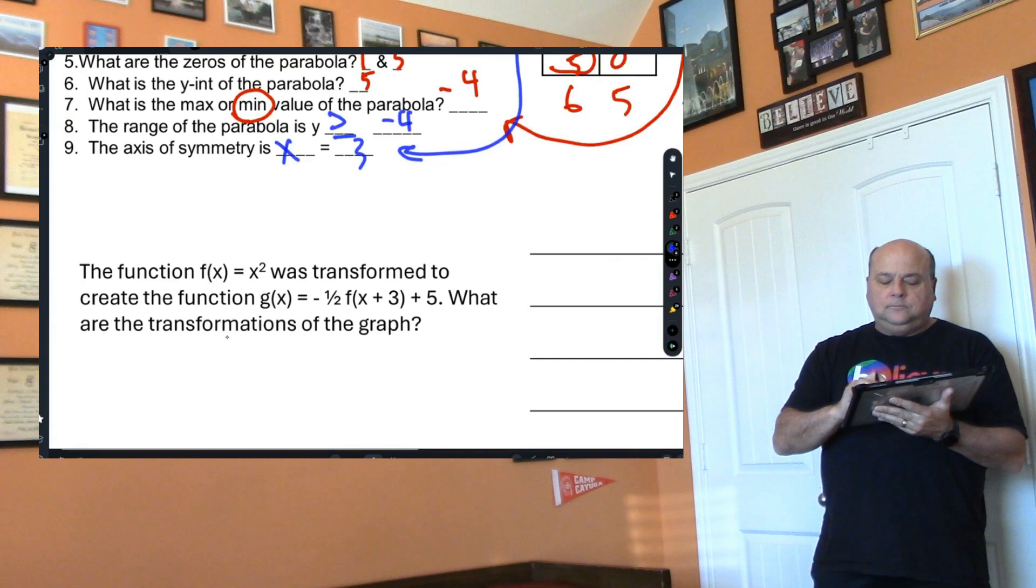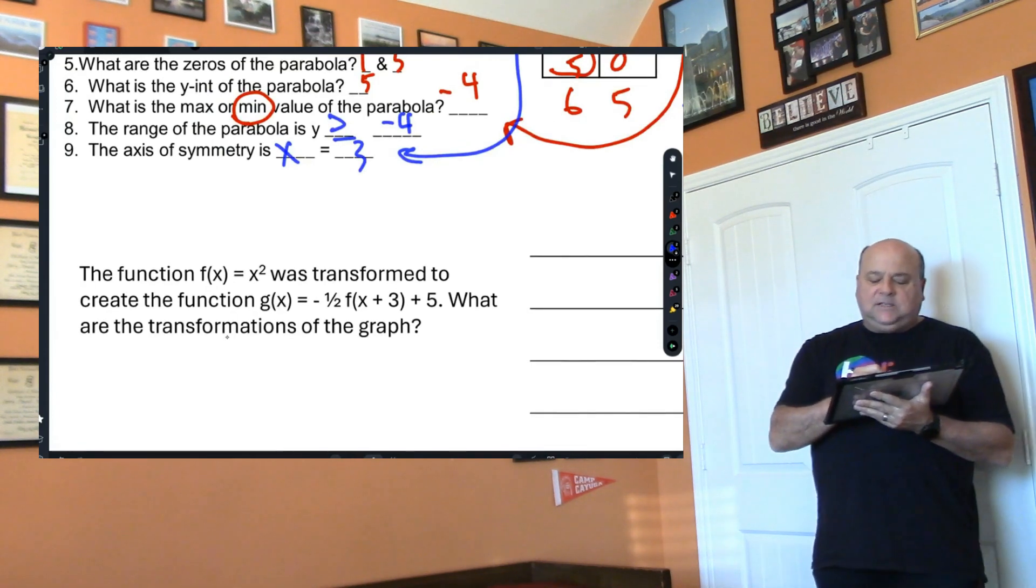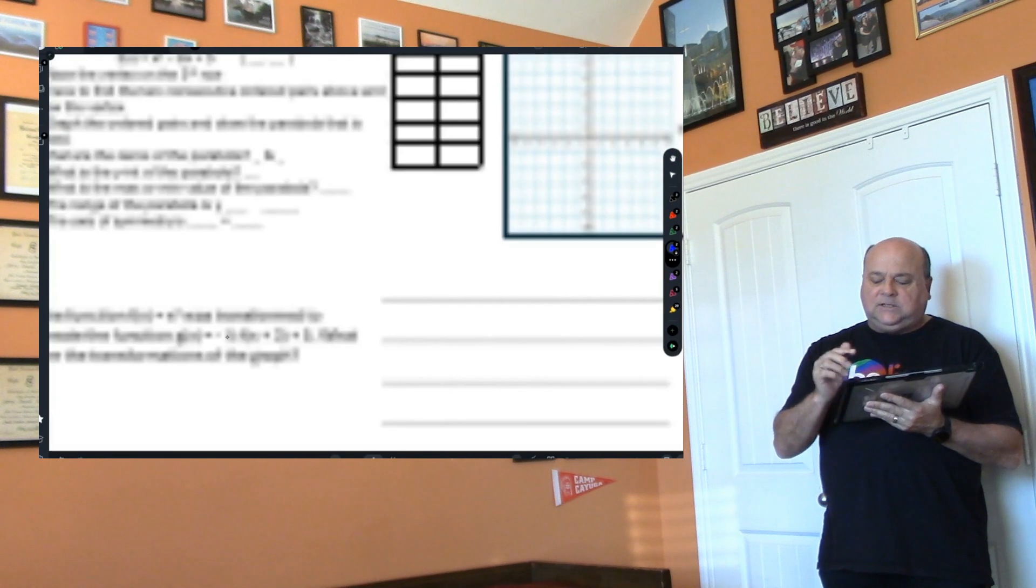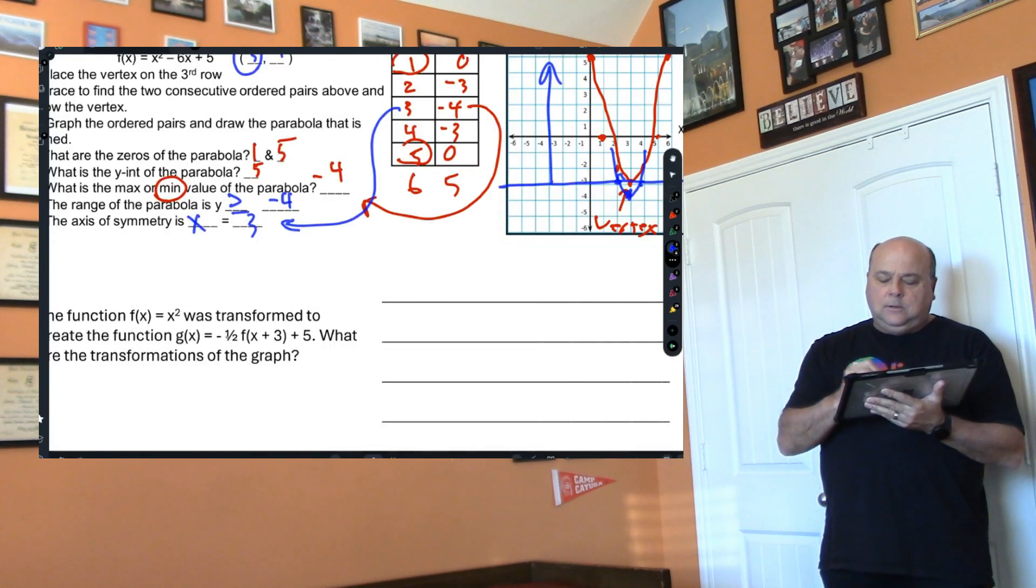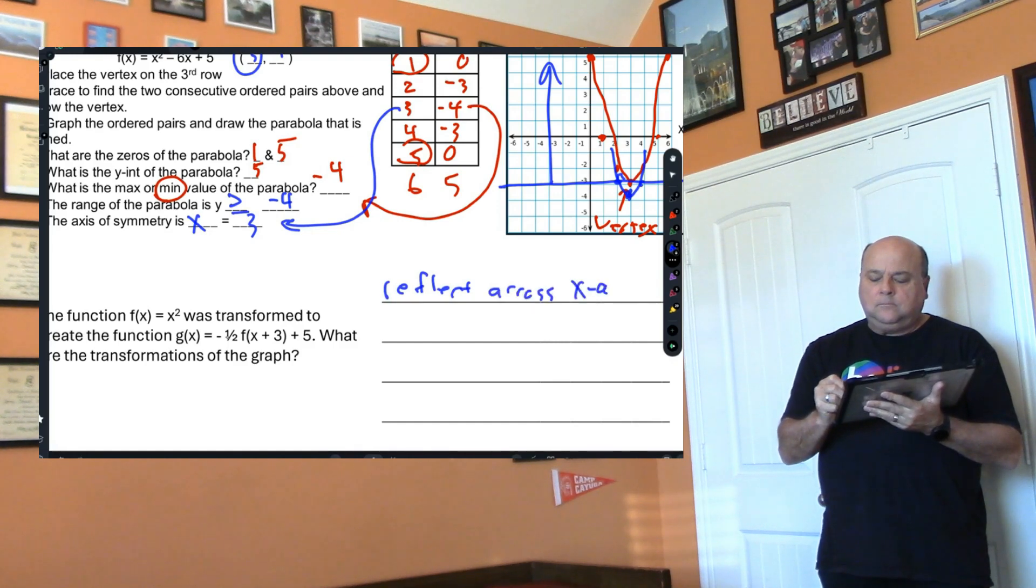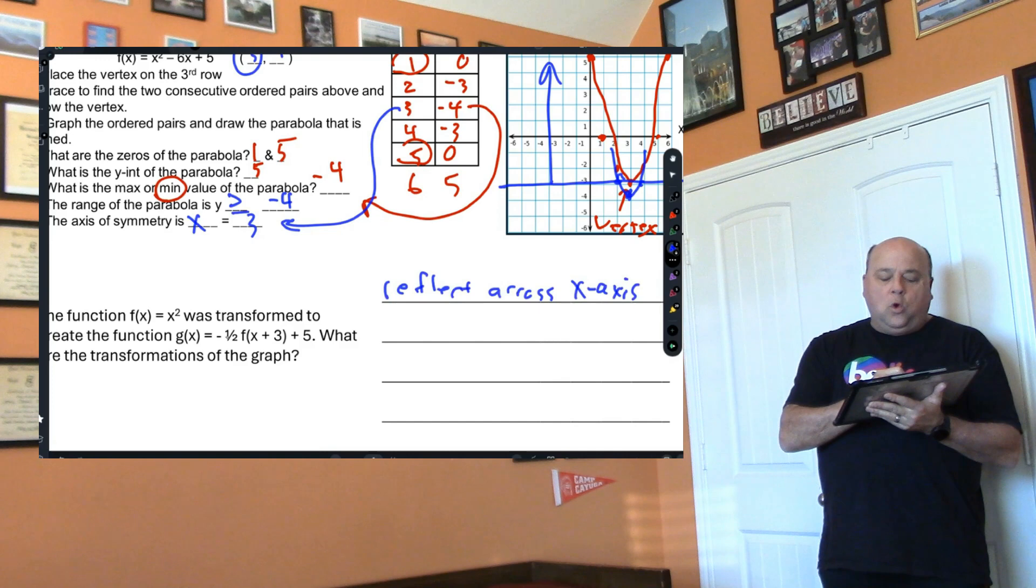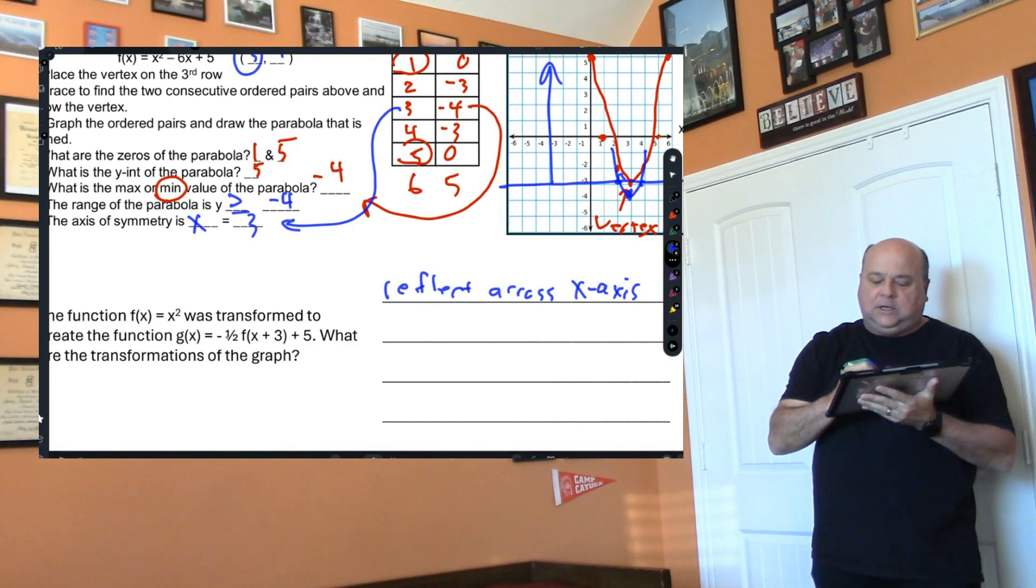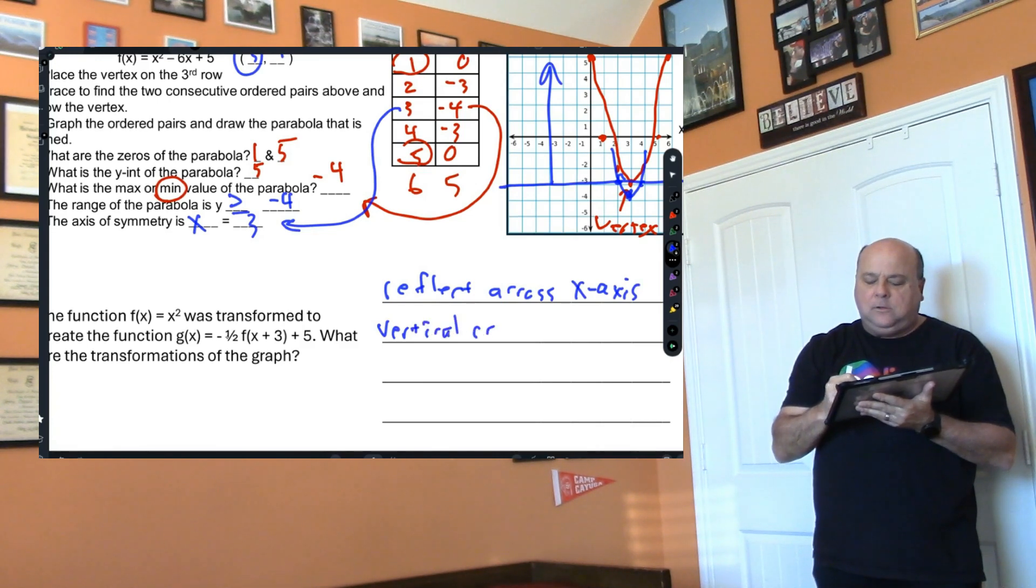Now let's go to the next one. Remember, this flips it. Is it negative? Yes, so it's going to reflect across the x-axis. The one-half is going to make it wider, or it's going to vertically compress it. So that's a vertical compression of one-half.